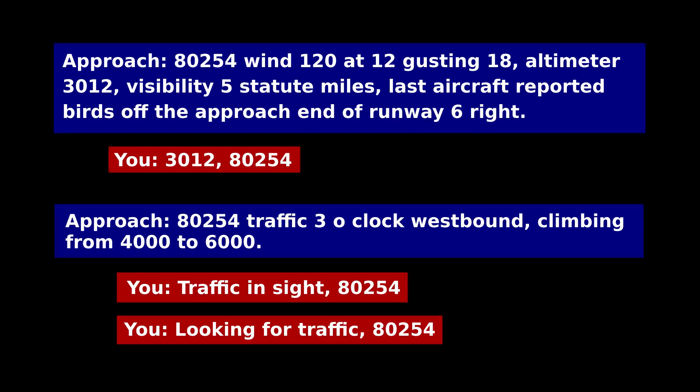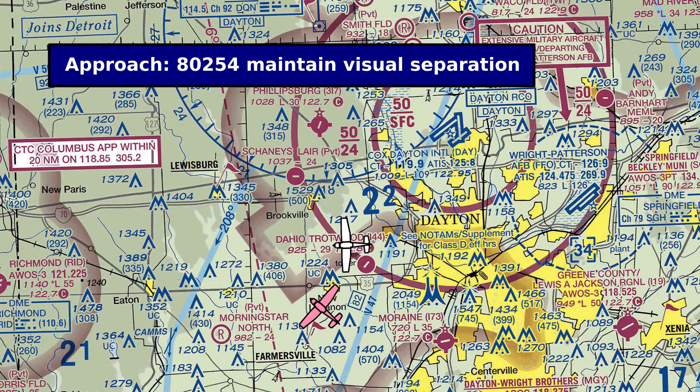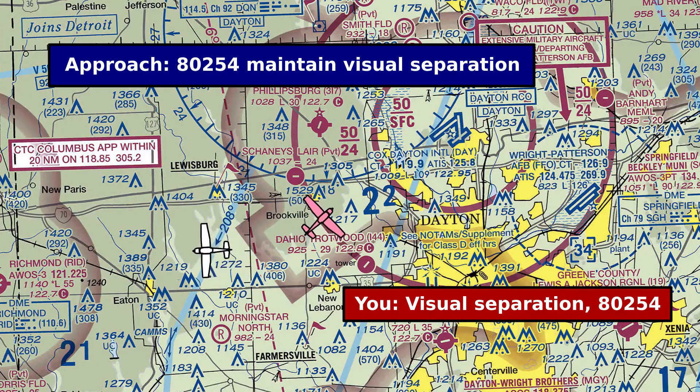Keep in mind that if you say traffic in sight, the next thing you're going to hear is maintain visual separation, and that means you're likely to not get any more updates on the position of that traffic. Also, you should understand that even though approach controllers often provide advisory traffic notices, they do not issue clearances and are not providing separation services to pilots flying under visual flight rules. It is still 100% your responsibility to look out the window and avoid other aircraft in and around Class Charlie airspace.